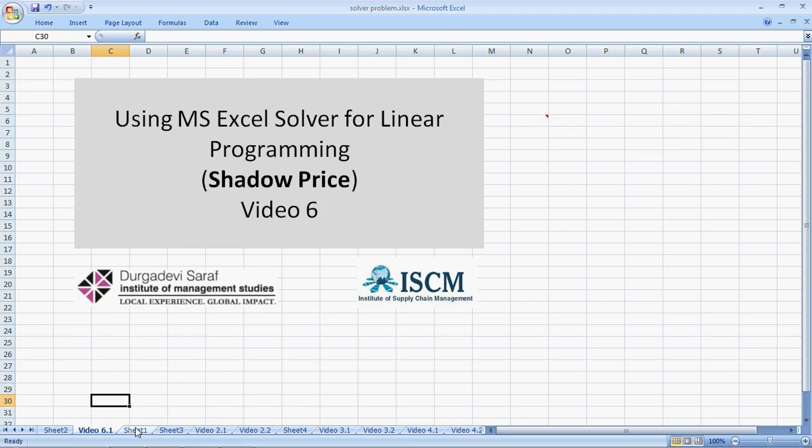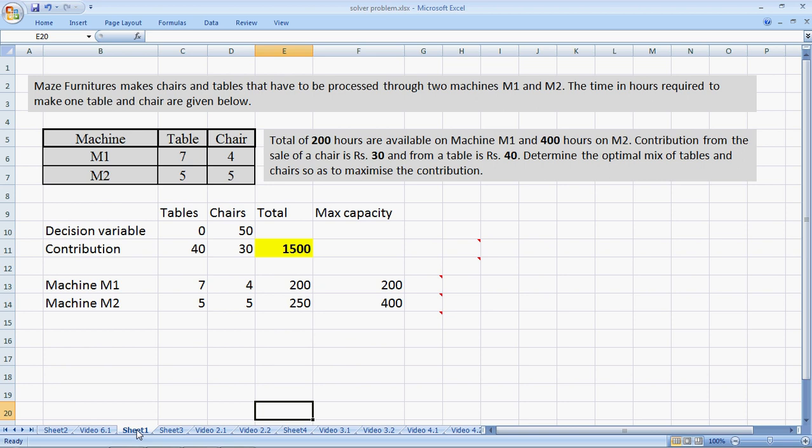Let's jump into the problem that we used. Our favorite maze furnitures. They make two products, tables and chairs, using two resources, machine M1 and machine M2. The table here gives the need of the products on the machine. So one unit of table needs seven hours on M1 and five hours on M2 and so on.